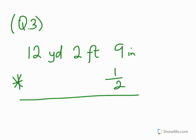Question 3: 12 yards 2 feet 9 inches times one-half. Now, the way this system works: if they give you your question in decimal you leave it in decimal; if they give it to you in fraction you leave it in fraction. That is a recommended approach.